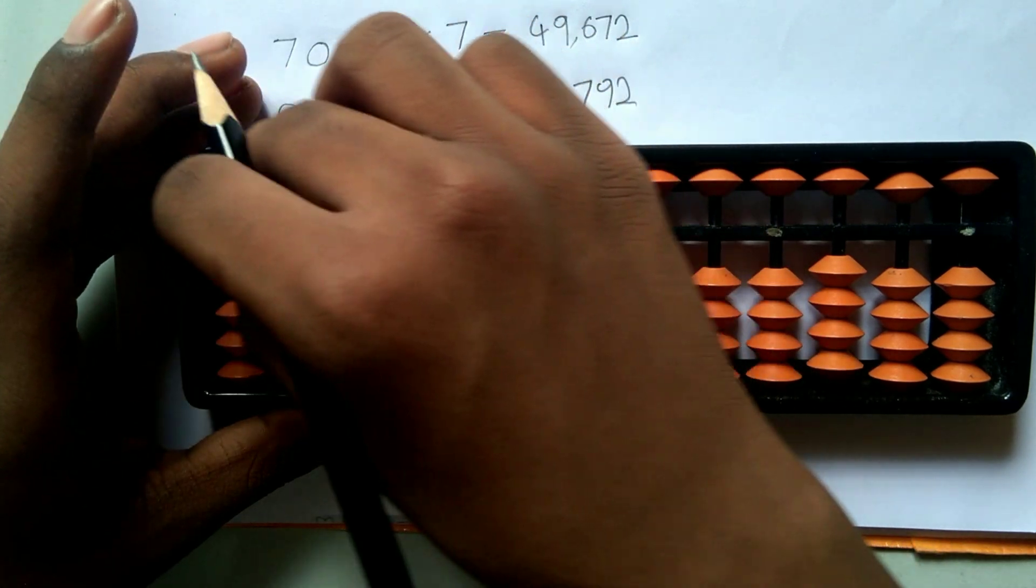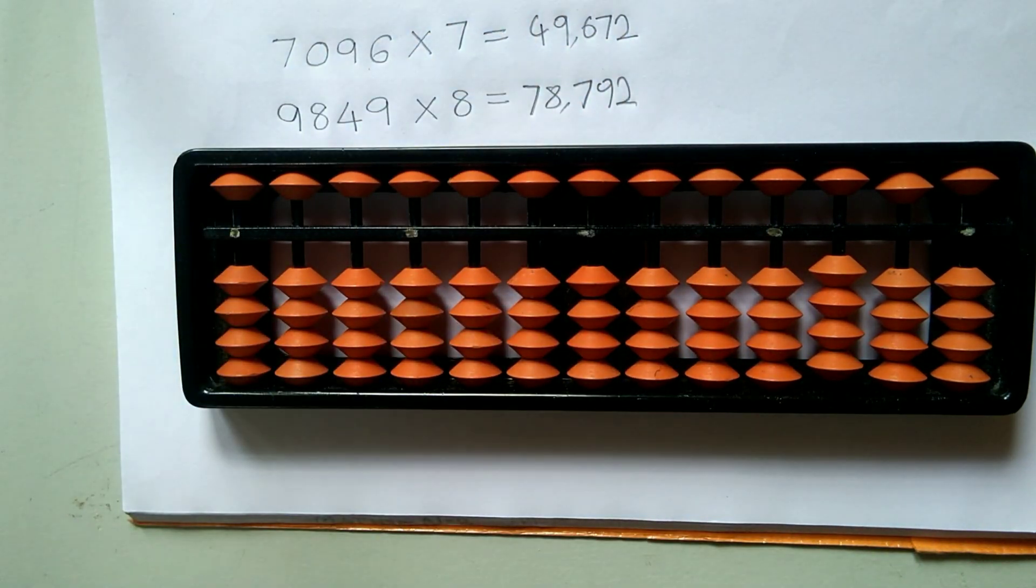Friends, hope you understood the concept clearly. If you have any doubts from today's concept, feel free to ask me in the comment section. With this, we have finished level 6 of Abacus or the advanced level 2. In the next class, we will start level 7 of the Abacus. Bye friends. Thank you for watching.